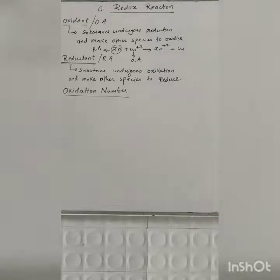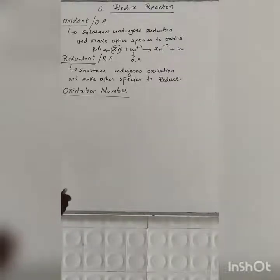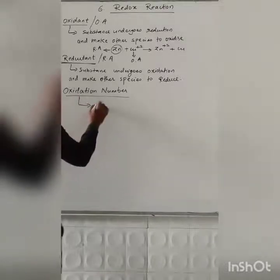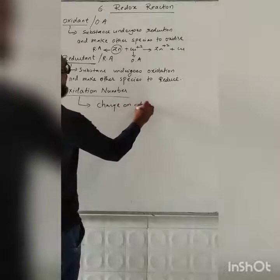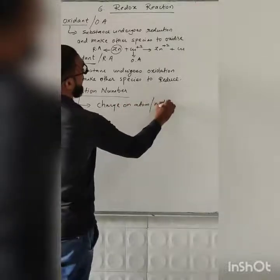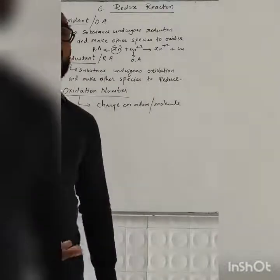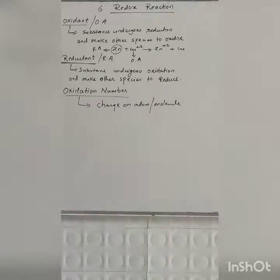Now another very important topic — that is the Oxidation Number. What is oxidation number? Oxidation number is nothing but the charge on atoms or molecules. Or I can say, it is the residual charge of the atom. The residual charge of the atom, or charge of the atom or molecule, is called the oxidation number.